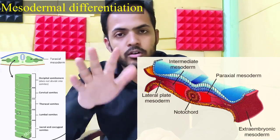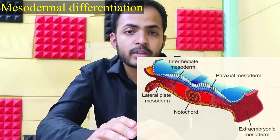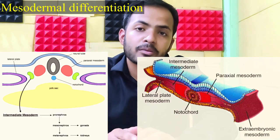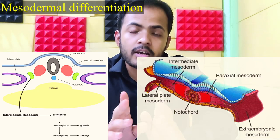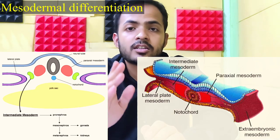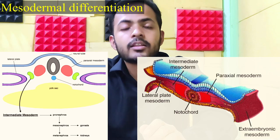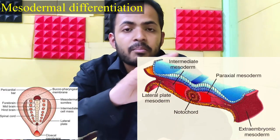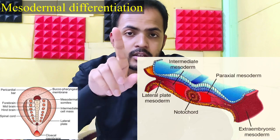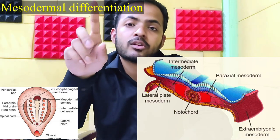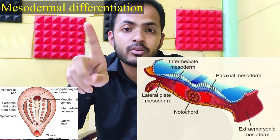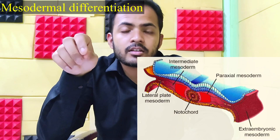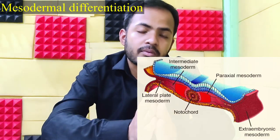From the intermediate mesoderm, both kidneys along with the testes in males and ovaries in females arise. During mesodermal condensation, a pericardial bar forms in the lateral plate mesoderm area along with the pericardial sac. After that, the lateral plate mesoderm divides into two parts.